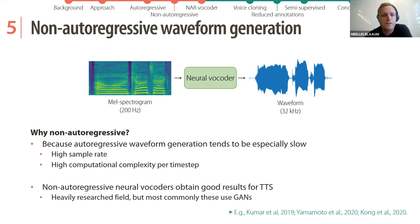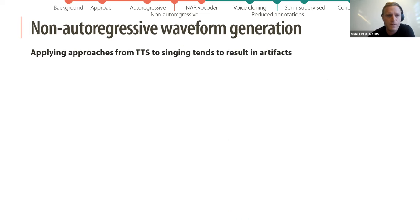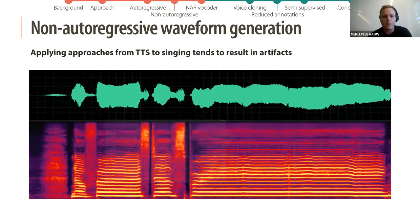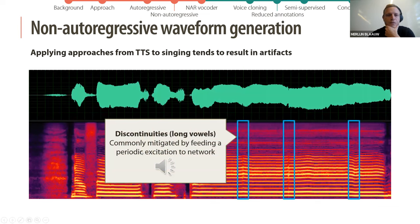Non-autoregressive neural vocoders obtain quite good results for text-to-speech and there are many different approaches, most based on GANs. However, applying these approaches to singing tends to result in some artifacts. One typical artifact is discontinuities in long vowels.